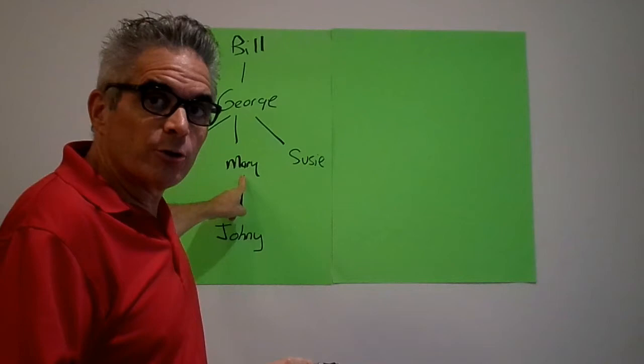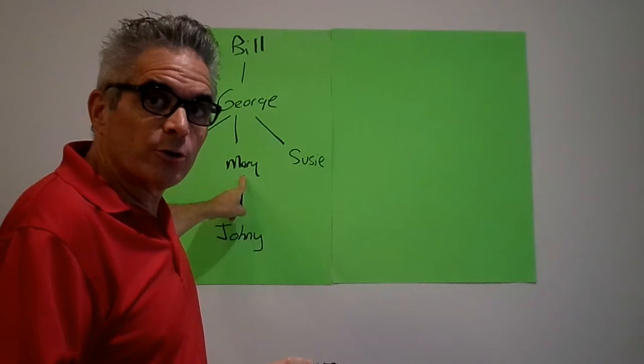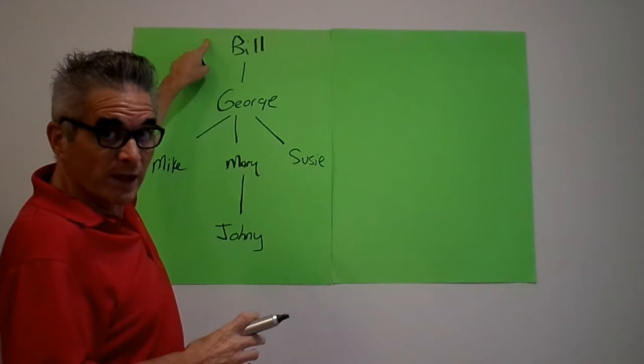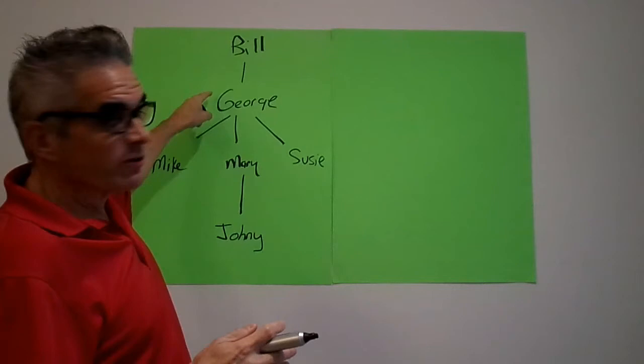When you get somebody new in your business on your team, when Mary got sponsored by George, this is going to take some work on all parties. When Mary gets sponsored, Mary should find out who her direct upline is. She's getting sponsored by George, but Mary can also proactively say, well, who's above that? Above George is Bill.